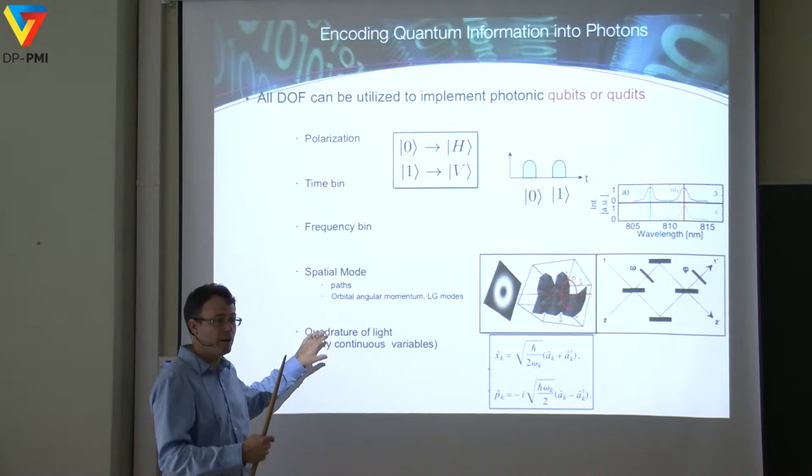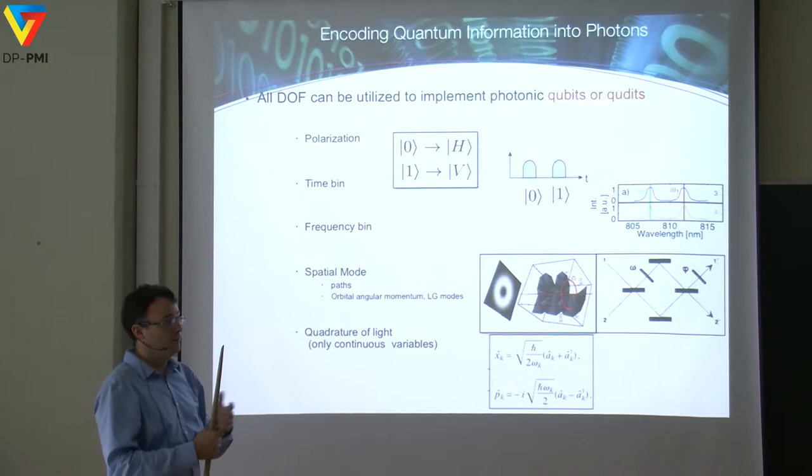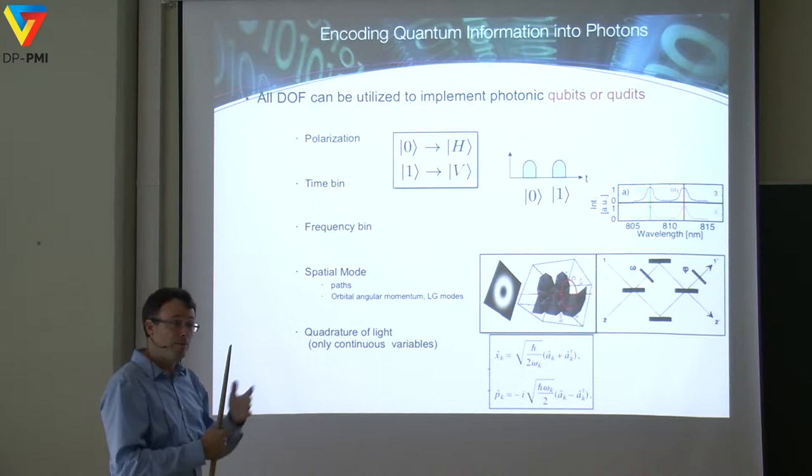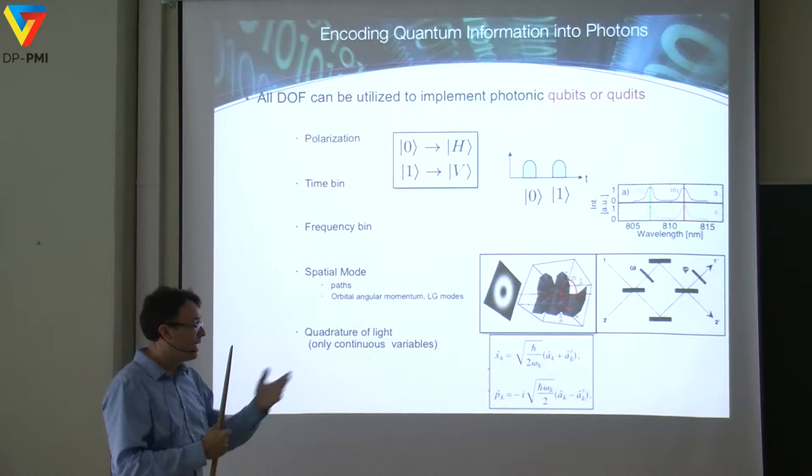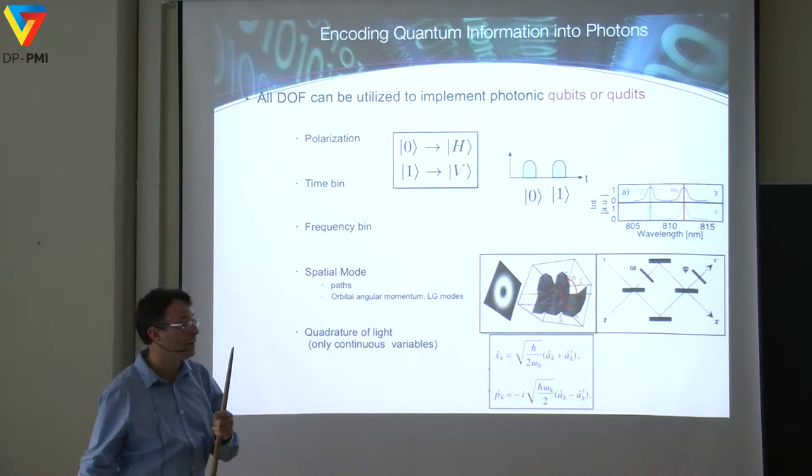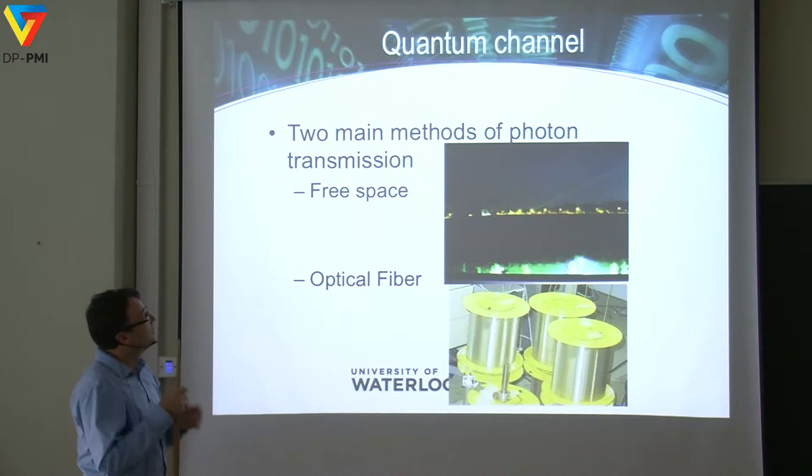Continuous variables do have interesting properties and features, at least for shorter distances, because the detector and source systems can be somewhat simpler than in the single photon case, and they have more resilience against background noise — so daylight operation or operation in illuminated fibers could be interesting.